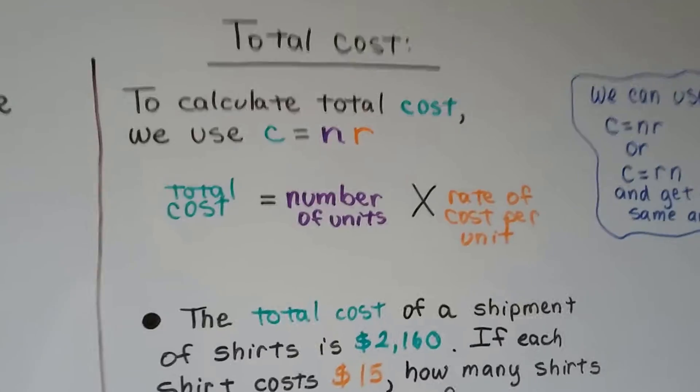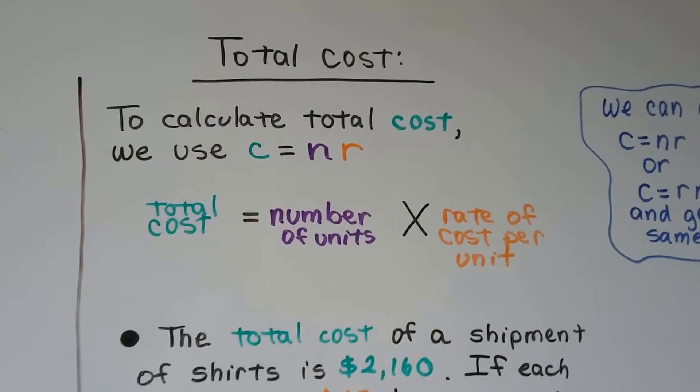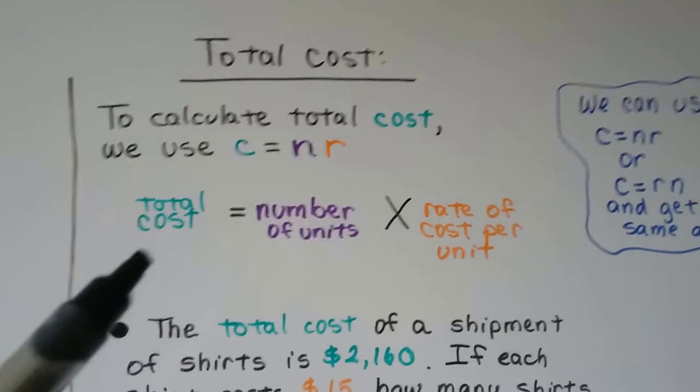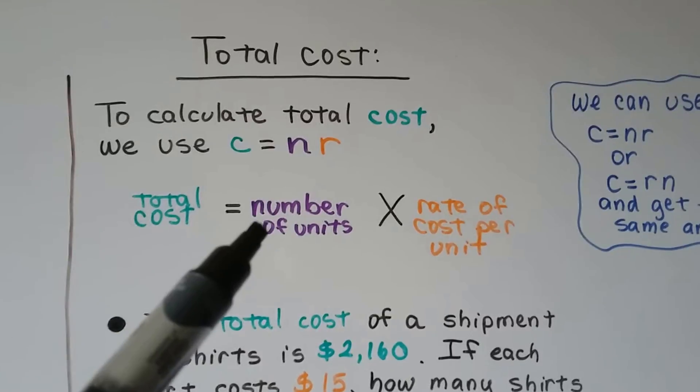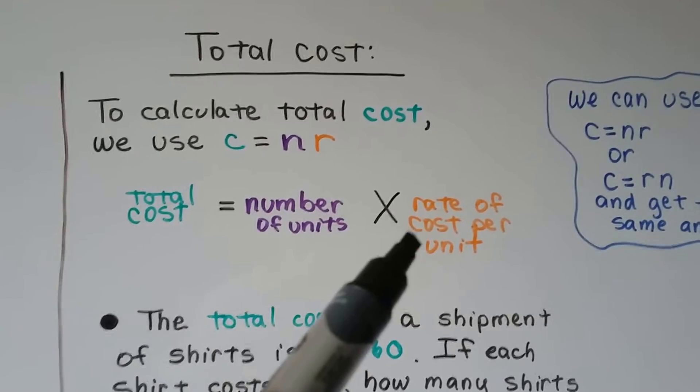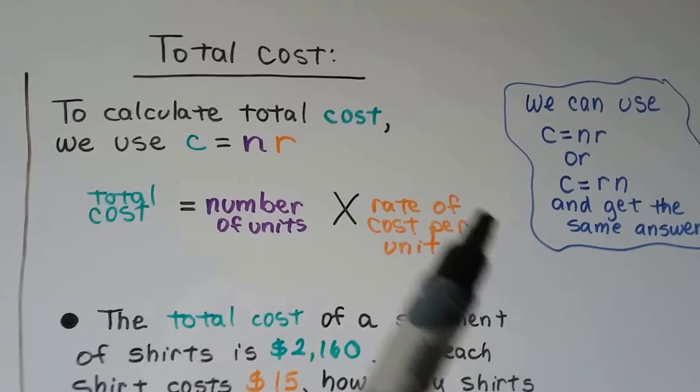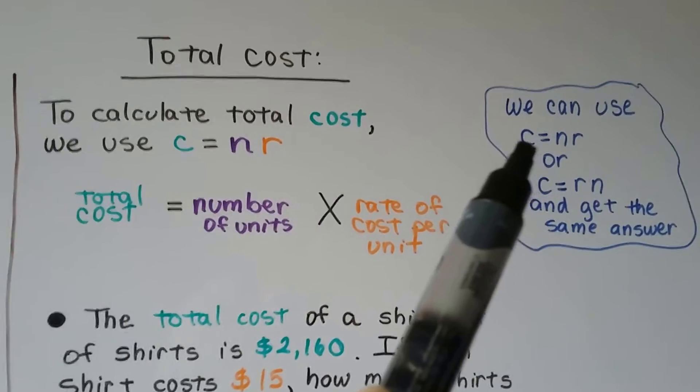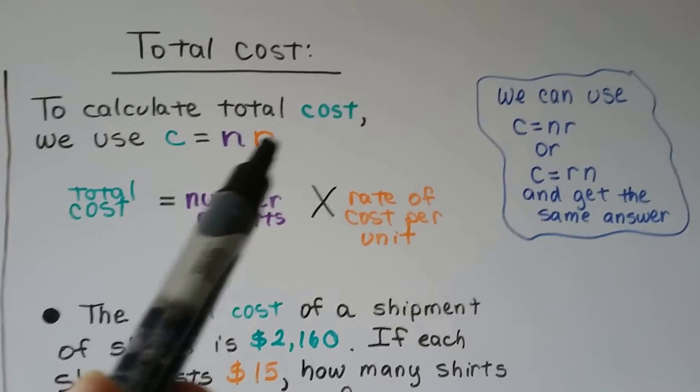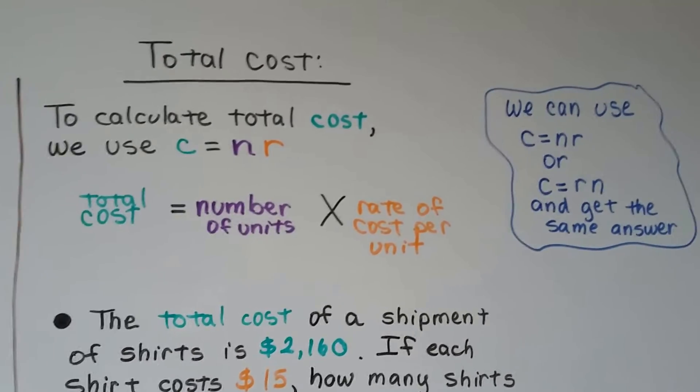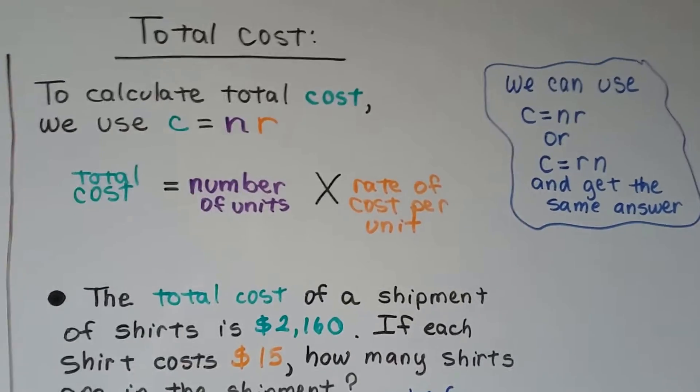For total cost, to calculate total cost, we use the formula c equals nr. That's the total cost, that's the c for cost, equals number, that's the n, number of units, times the rate of cost per unit. That's the r, the rate. And we can use this c equals n times r, or c equals r times n. The n times r, or the r times n, is going to give us the same answer, right? 2 times 3, or 3 times 2, it's still 6. So it doesn't matter what order these are in, as long as they're both there.